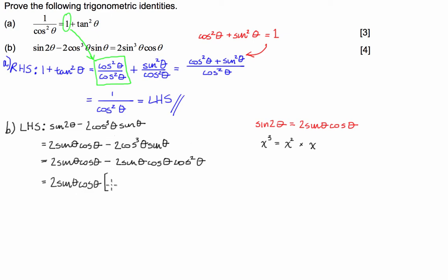We just have cos squared theta. Now we have the Pythagorean identity again popping its head up.